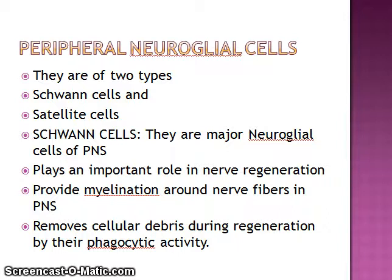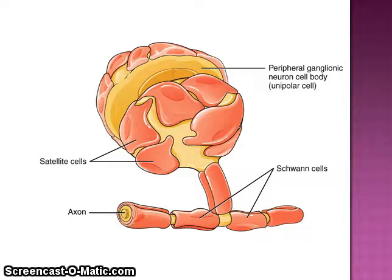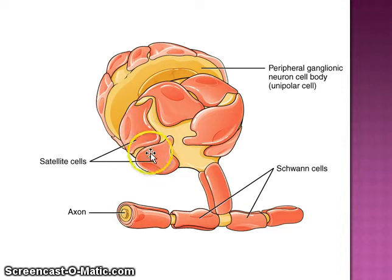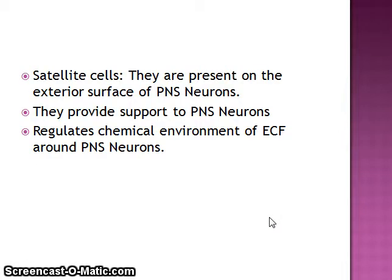This image shows satellite cells and Schwann cells. Satellite cells are found on the peripheral aspect — on the surface. The functions of satellite cells include: they are present on the exterior surface of peripheral nervous system neurons, they provide support to PNS neurons, and they regulate the chemical environment of extracellular fluid around peripheral nervous system neurons.